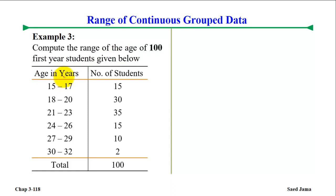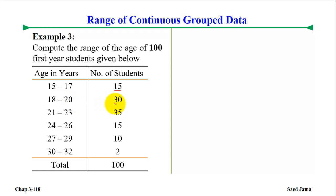For example, suppose we have an age distribution with a number of students as frequencies. The class groups are: age 15 to 17, age 18 to 20, age 20 to 23 with 35 students, and age 24 to 26.